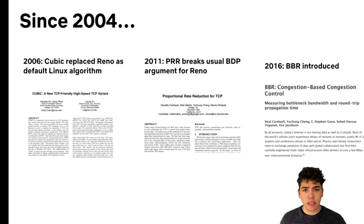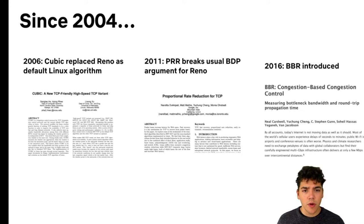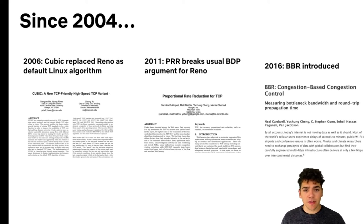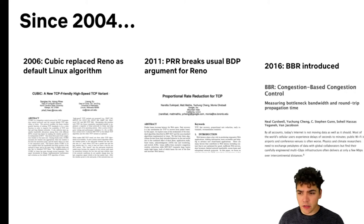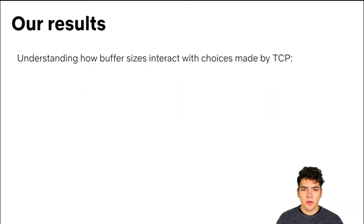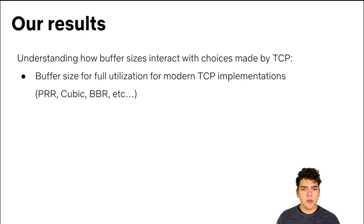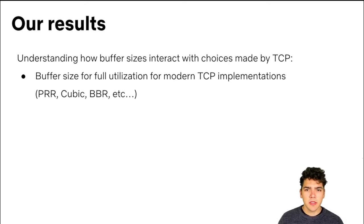Since 2004, a lot has changed in the internet. In 2006, CUBIC replaced Reno as the default Linux algorithm. In 2011, Linux introduced PRR, which changes the way Reno responds to loss and breaks the argument for the usual BDP rule. In 2016, Google introduced BBR, which further changed congestion control. So those two rules of thumb are for TCP Reno flows, and in our paper we focus on how different TCP choices impact buffer size requirements for modern implementations including PRR, CUBIC, and BBR.